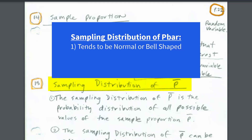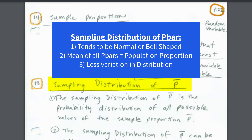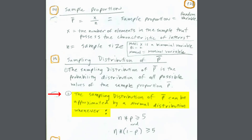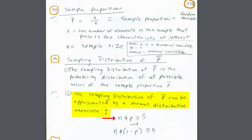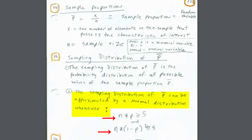The sampling distribution of p-bar is approximately normal. The mean of all possible p-bars equals the population proportion, and there is less variation in the sampling distribution of p-bar. It can be approximated by the normal distribution — meaning we can use norm.dist and norm.s.dist — when two conditions hold: n times p is greater than or equal to 5, and n times the complement of the population proportion is also greater than or equal to 5. We'll check these each time.